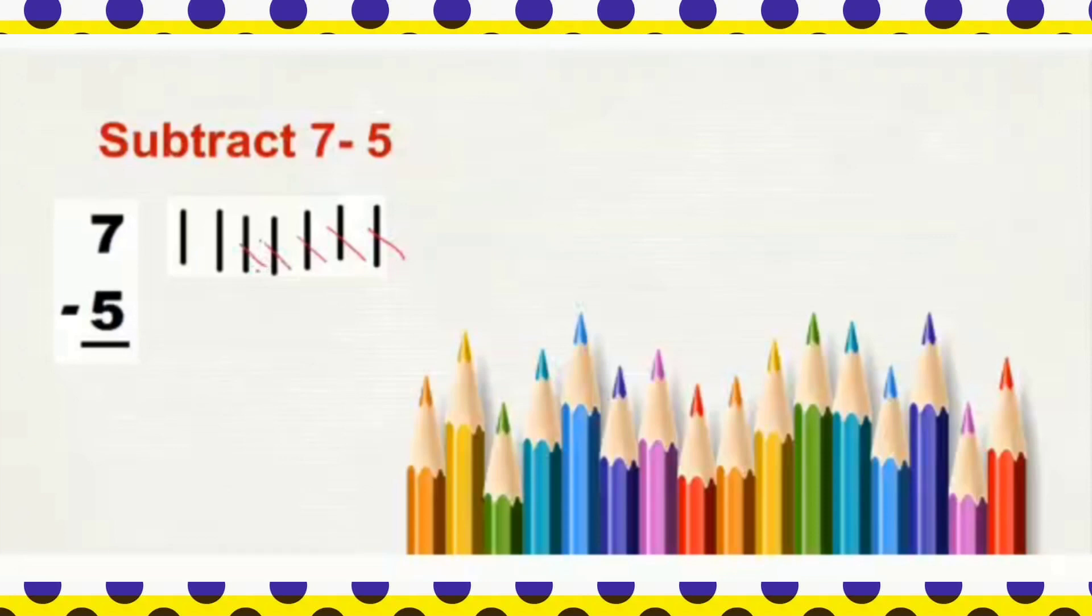From 7 lines, if we take away, if we cross out 5 lines, how many will be remaining? 1, 2. So, the difference of 7 minus 5 is 2.